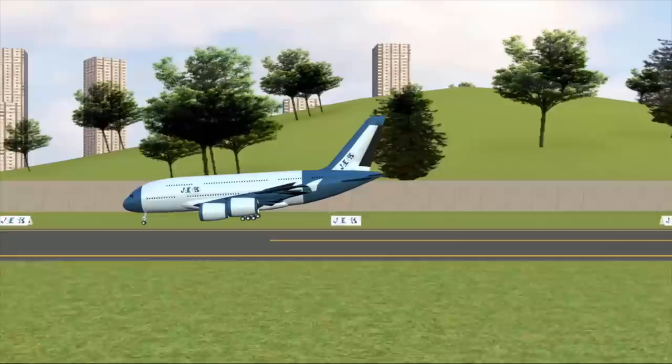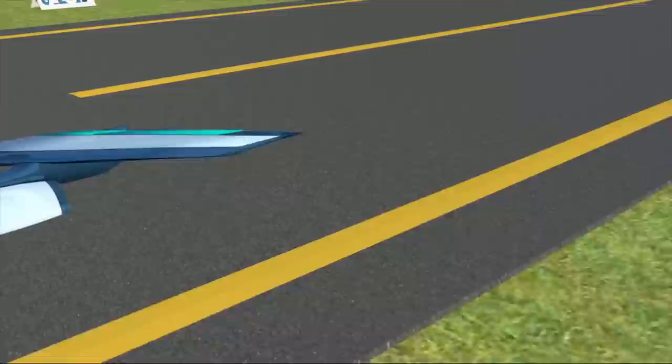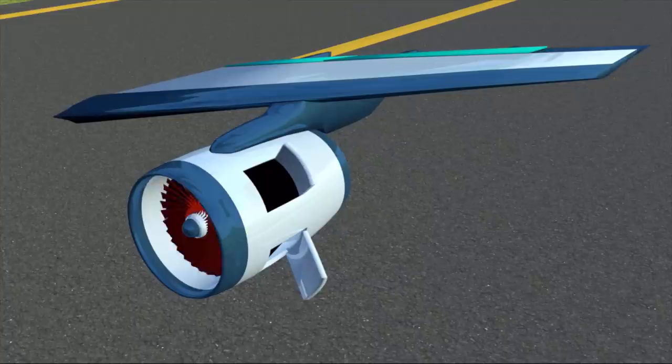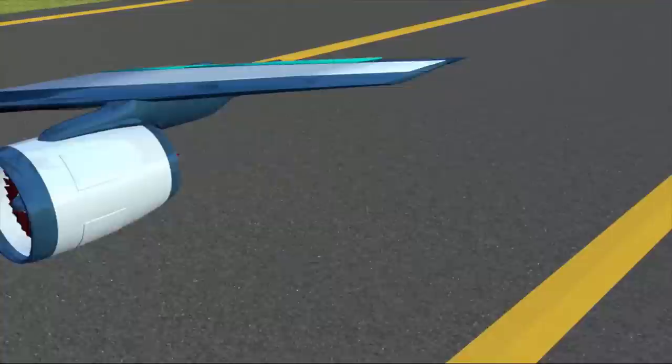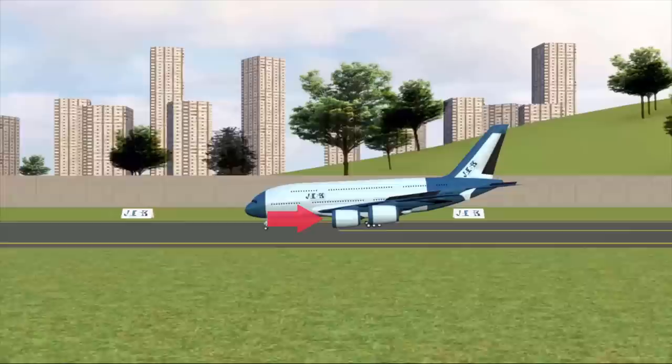At this point, the pilots use another trick to reduce the stopping distance, that is, the reverse thrust. The engine covers open and the air which was supposed to go back is pushed forward. This will generate a reverse thrust to facilitate the stopping of the airplane.